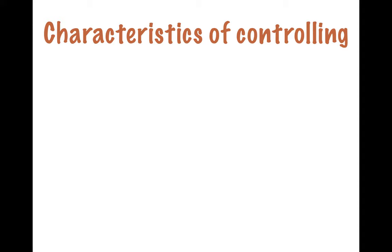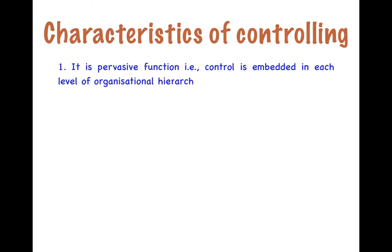Now let's look at the characteristics of controlling. The first characteristic is that it is a pervasive function, which means that control is embedded in each level of the organizational hierarchy — from the top to the bottom level, the control function is required everywhere.